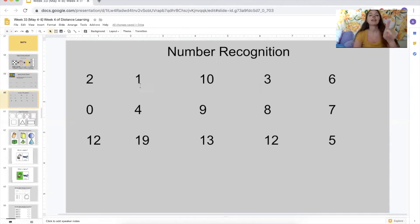Two, one, ten, very good. Three, six, zero, four, nine, eight, seven. Keep going. Twelve, nineteen, thirteen, twelve, five. Very, very good. Give yourselves a pat on the back. Excellent work.